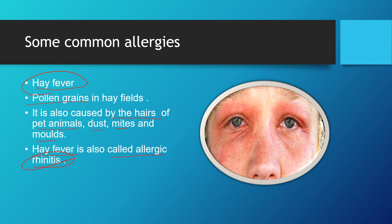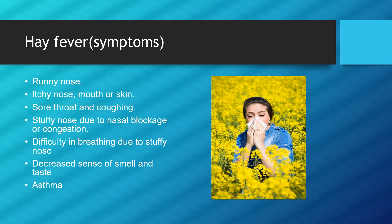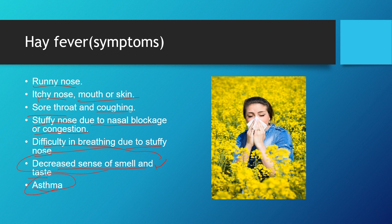There are other symptoms of allergic rhinitis: runny nose, itchy nose, itching of the mouth or skin, sore throat, coughing, stuffy nose due to nasal blockage or congestion, difficulty in breathing due to stuffy nose, and decreased sense of smell and taste because their nose is always stuffy. Asthma is another symptom — severe allergic rhinitis or severe blockage in the nose can lead to asthma.